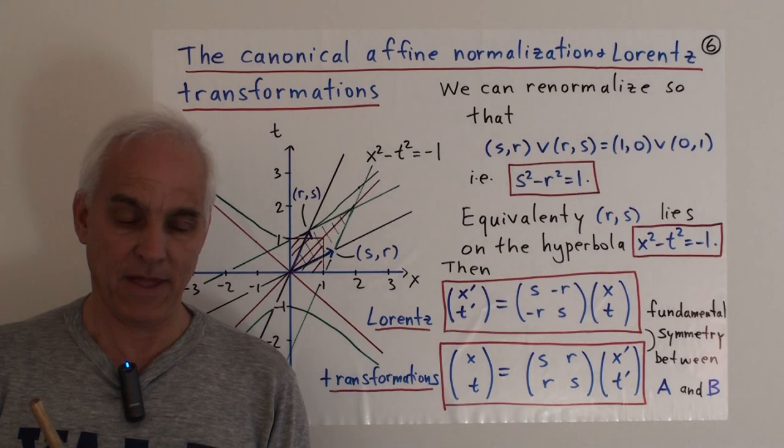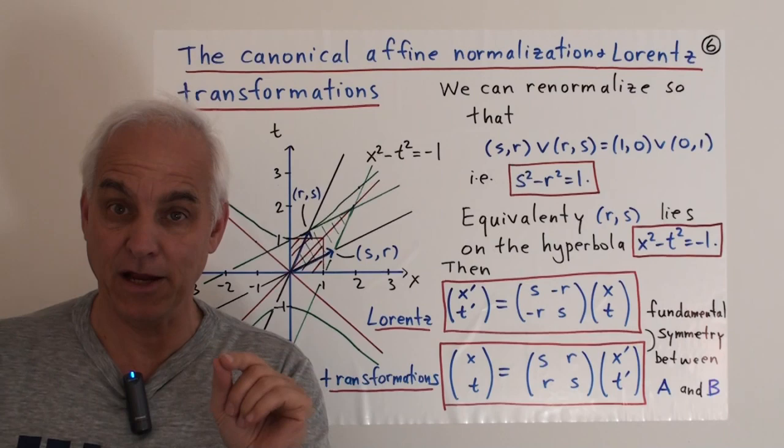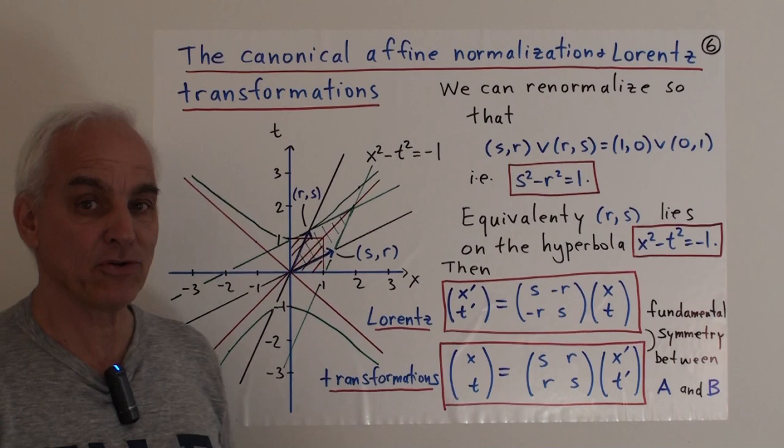This is a linear transformation that takes us from A's coordinates to B's coordinates, and here's the linear transformation that takes B's coordinates to A's coordinates.